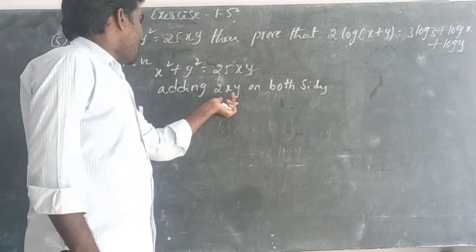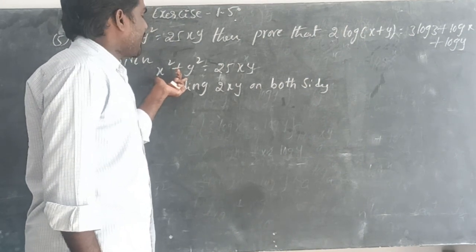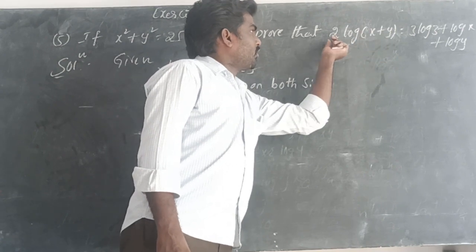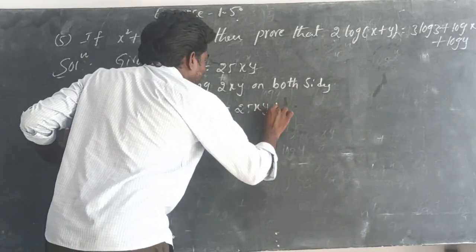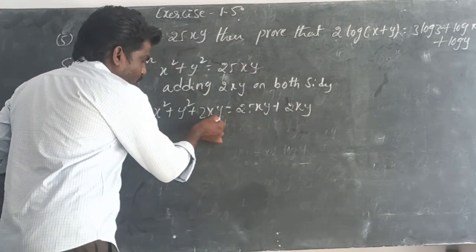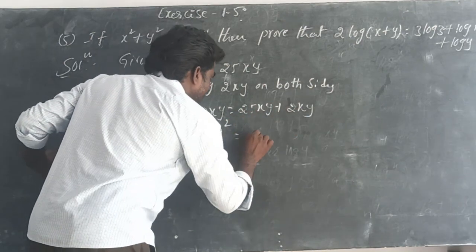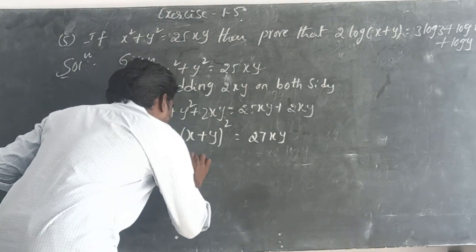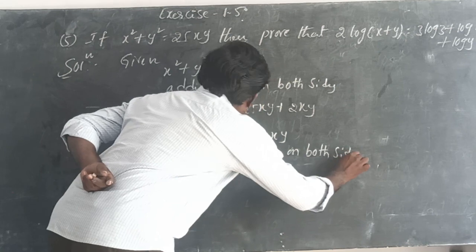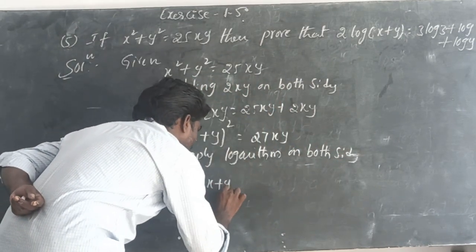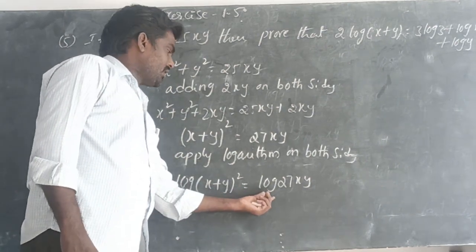Why add 2xy? When you add 2xy on both sides, it becomes x squared plus y squared plus 2xy equals 25xy plus 2xy, which equals 27xy. Now apply log on both sides: log of (x+y) whole square equals log 27xy.